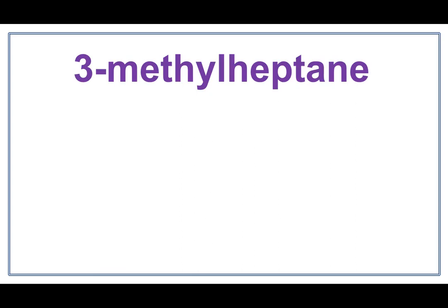Let's draw the structure for 3-methylheptane. 'Hept' tells us that there are 7 carbons in the parent chain. 'Ane' tells us that there are only single bonds between these carbons.